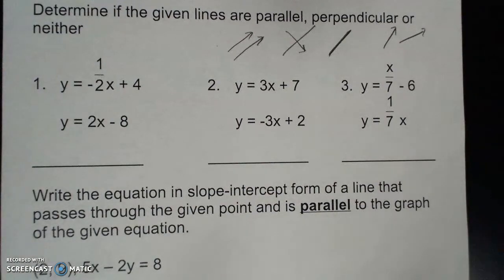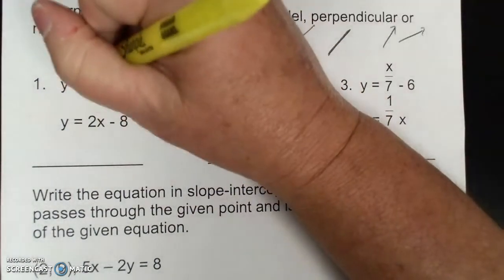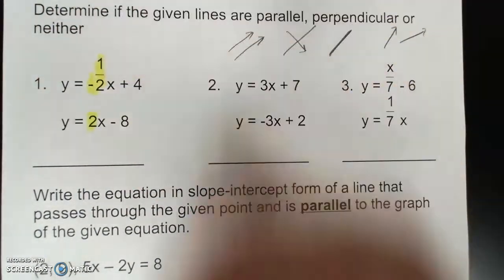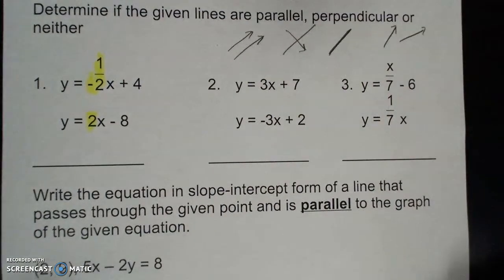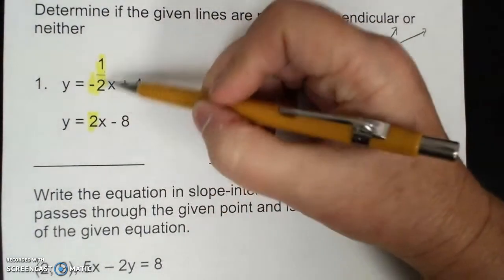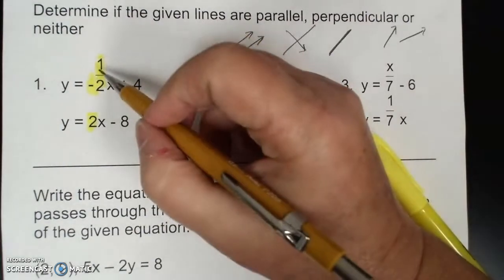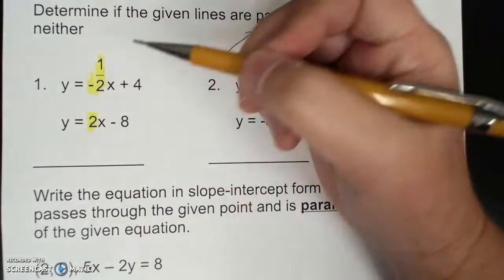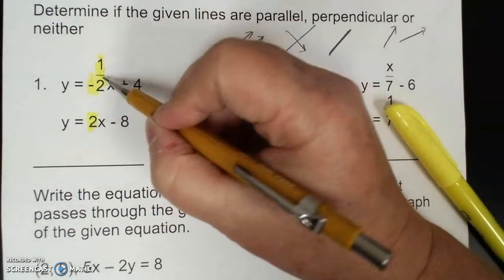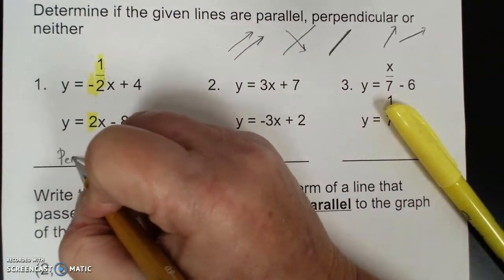In slope-intercept form, you're going to identify your slopes. I would take the two slopes and multiply them together. If they're not the same, they're not parallel. If I multiply them together and get negative 1, then they're perpendicular.